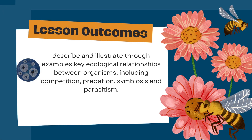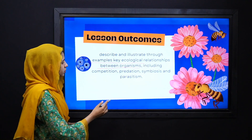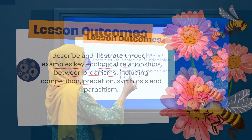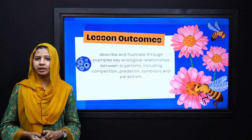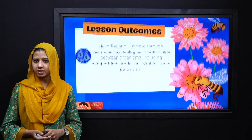In today's SLO, we will describe and illustrate through examples the ecological relationships between organisms, including three types of relations: the first one is competition, predation, symbiosis, and parasitism. Today's lecture mein hum in tamam relationships ko discuss karenge.